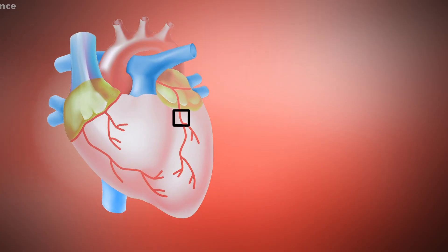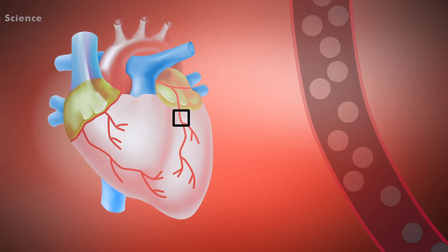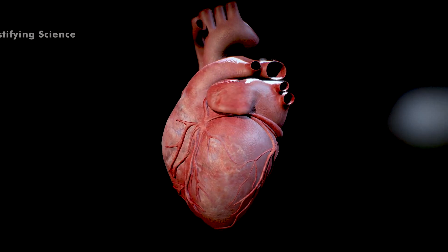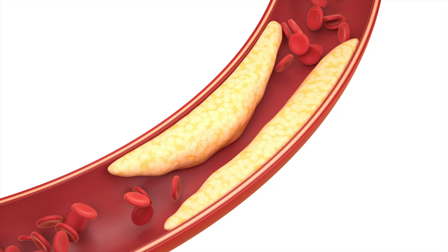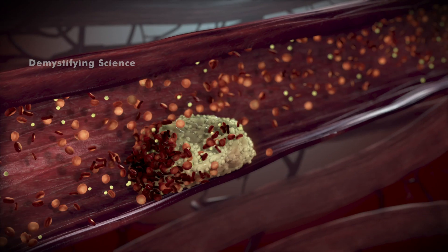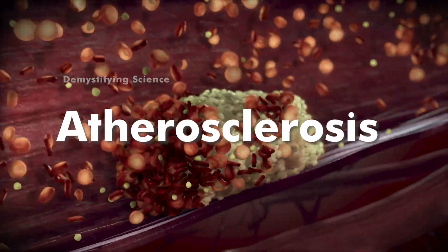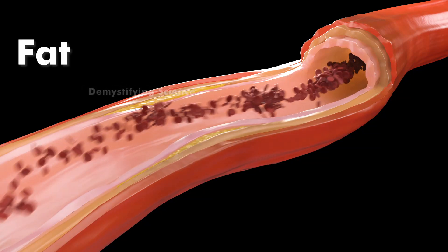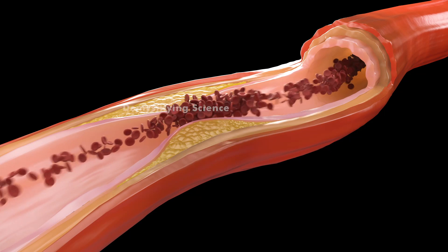The coronary arteries are the blood vessels that carry blood to your heart. Through blood, these arteries supply oxygen and nutrients to your heart. Coronary artery disease is the narrowing or blockage of these coronary arteries. This condition is usually caused by atherosclerosis — the build-up of fats, cholesterol and other substances in your artery walls.